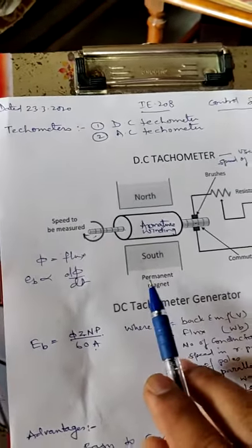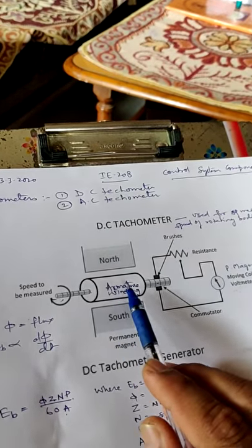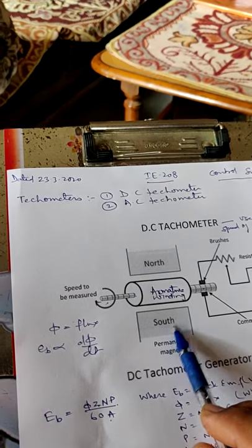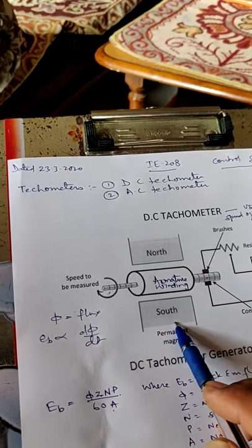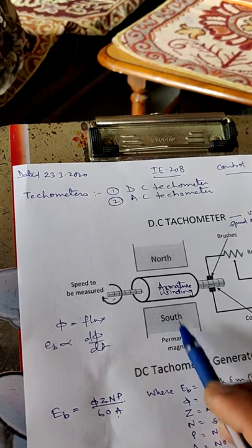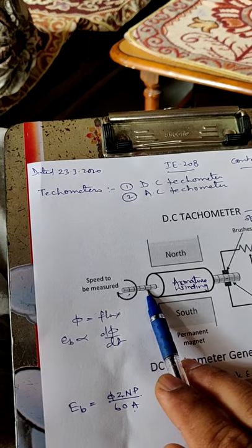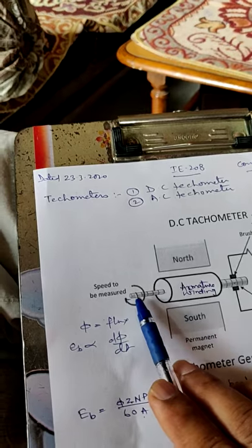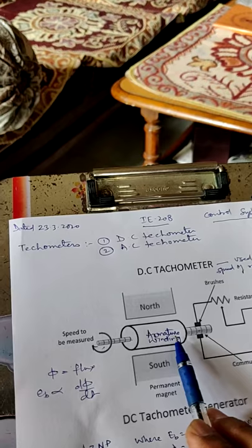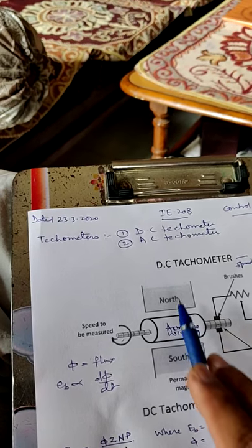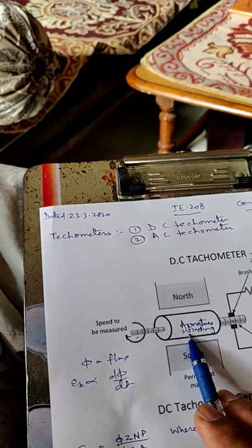This is the main construction of the DC tachometer. As we all know, when any conductor is moving in a rotating magnetic field, it produces an AC voltage. These are the two magnets, and in between the armature winding is there. If a body is connected with the rotating part, from the shaft this armature winding is rotating.